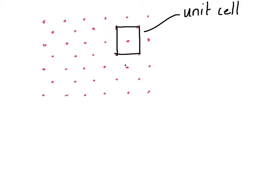Let us make an important and interesting observation here. How many lattice points does this unit cell contain? If you think about it, you will realize that it contains two lattice points. The four lattice points at the corners of this rectangle contribute a quarter lattice point each to this unit cell, and the one at the center contributes an entire lattice point — giving a total of two lattice points per cell.